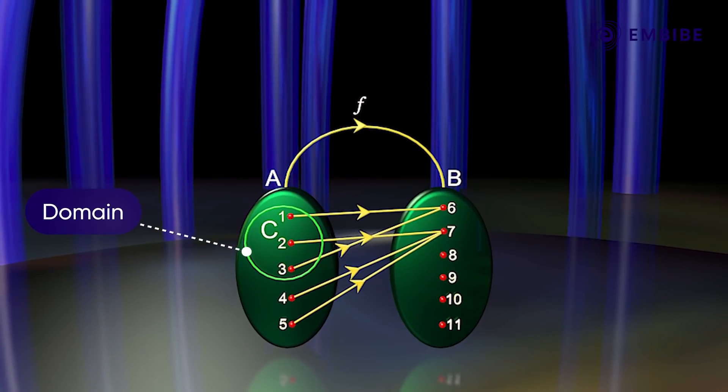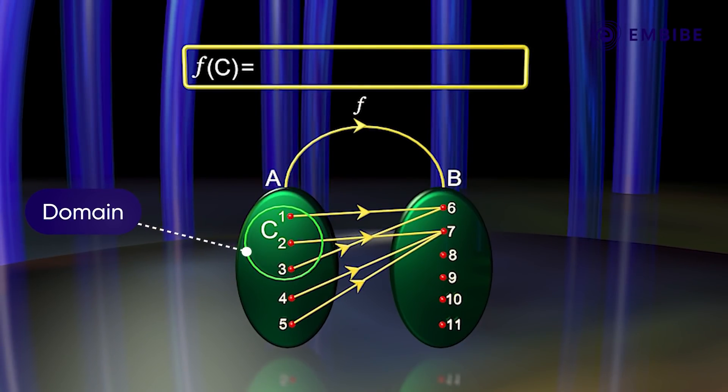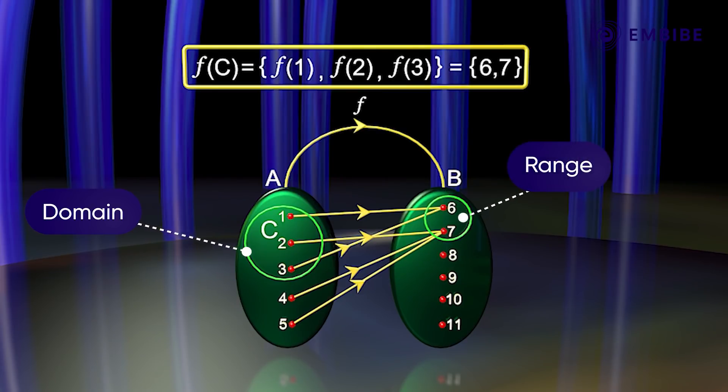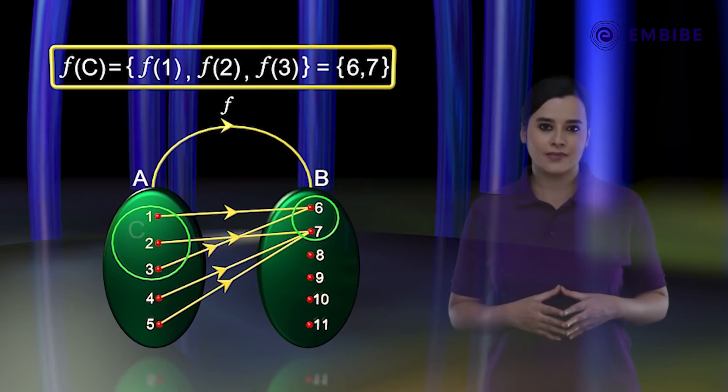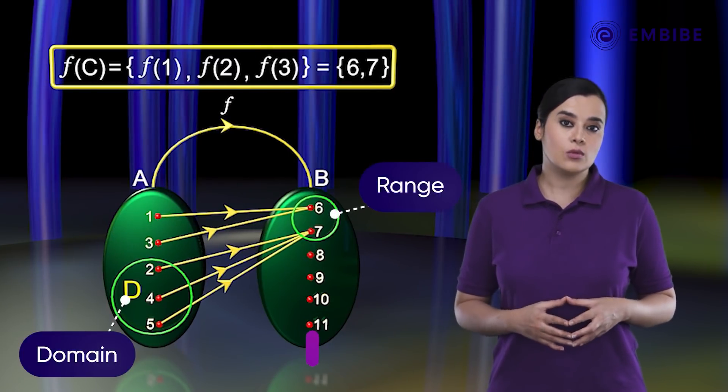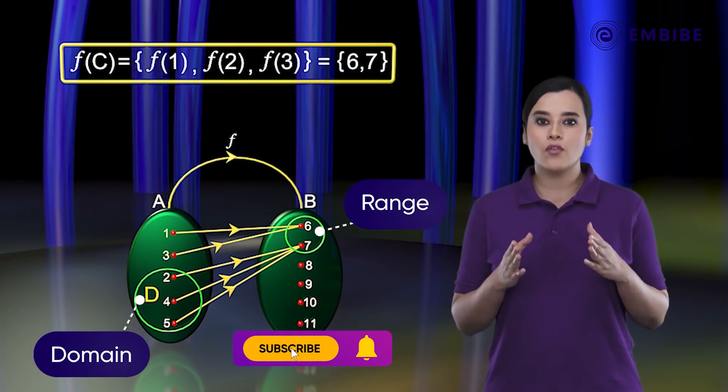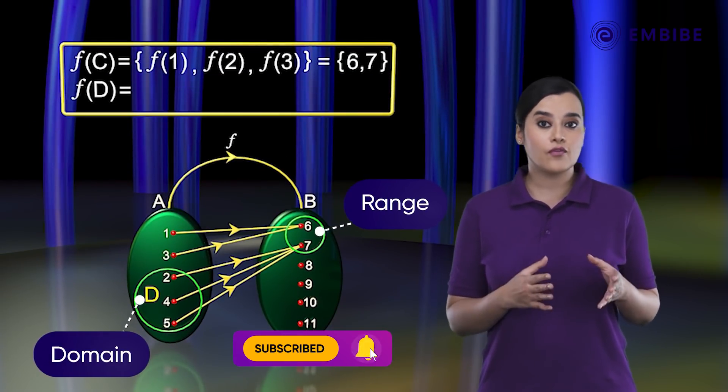Then f(C) = {f(1), f(2), f(3)} = {6, 7}. If D = {2, 4, 5}, then f(D) equals...